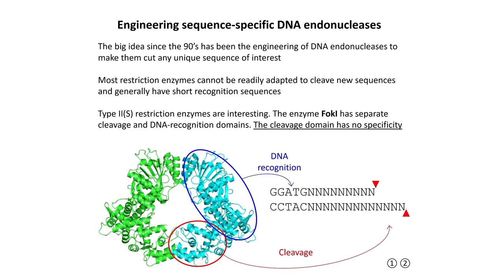However, there's a class of enzymes — the type 2S restriction enzymes — which are quite interesting. An example is the enzyme FokI. These type 2S restriction enzymes have separate cleavage and DNA recognition domains. Importantly, the cleavage domain has no specificity and can work on its own — it just needs to be recruited to the DNA. FokI functions as a dimer; that's an important feature. There are two molecules of the same protein shown here in green and in blue.